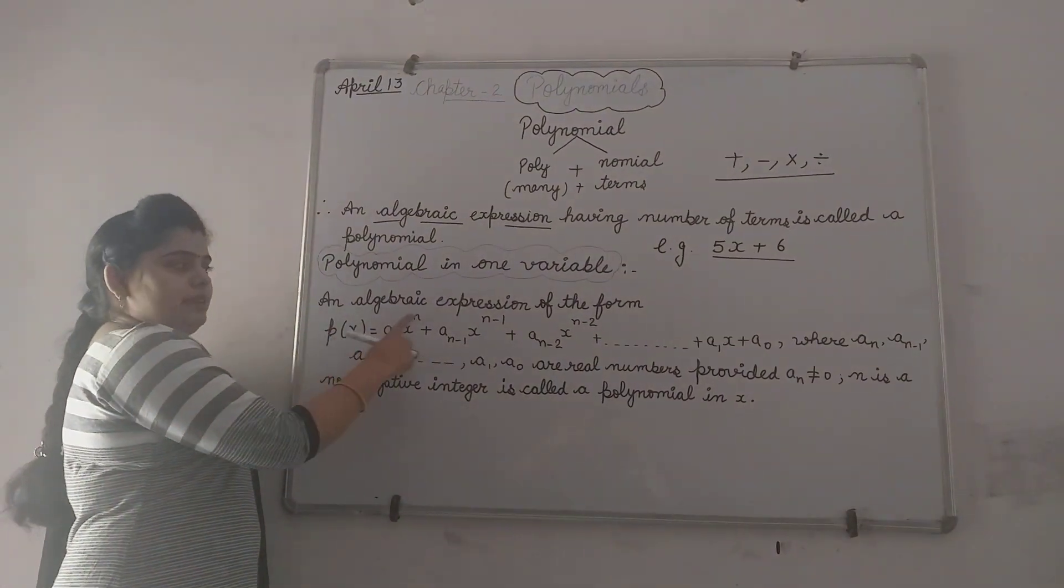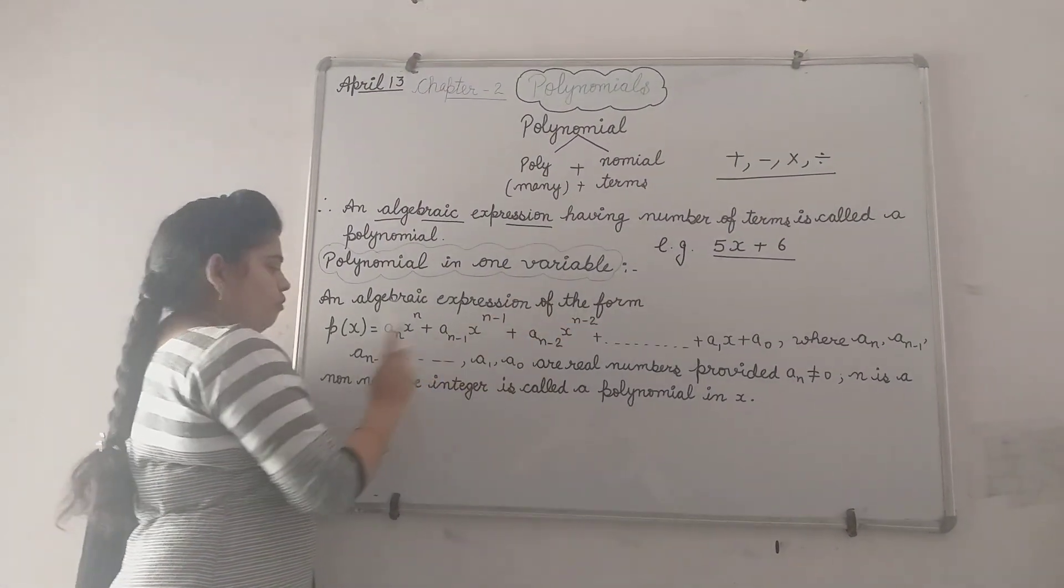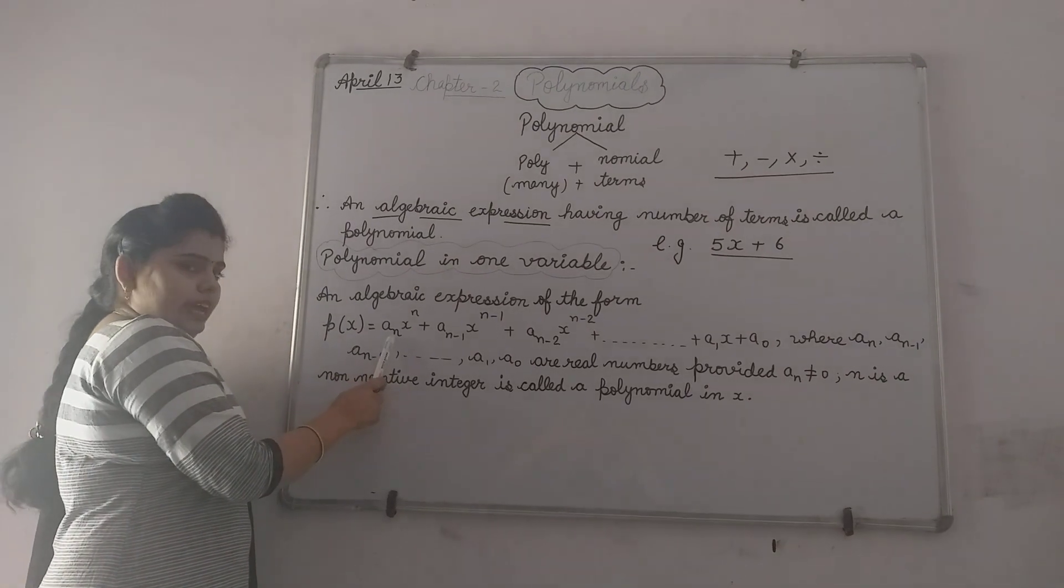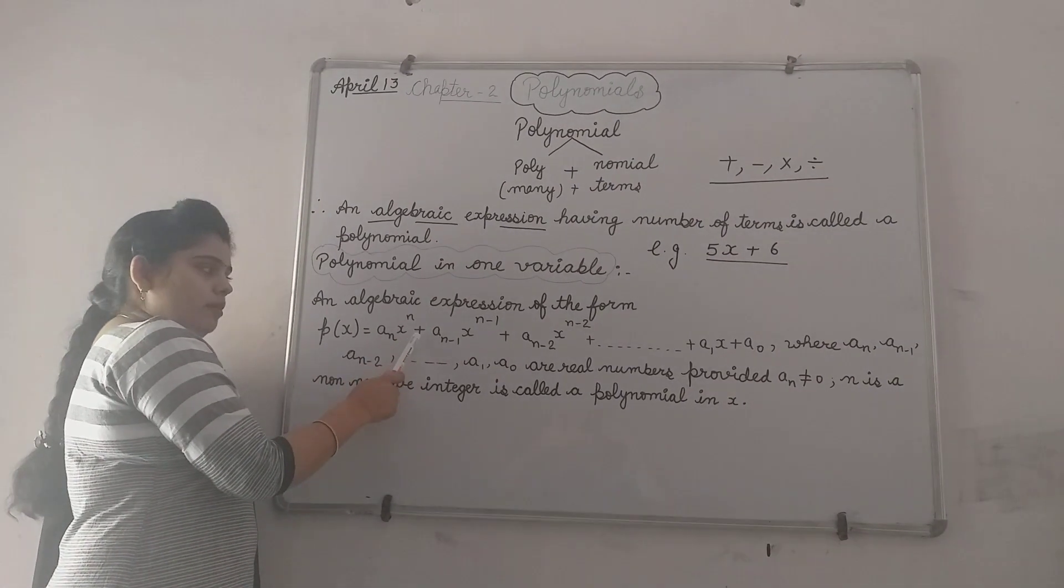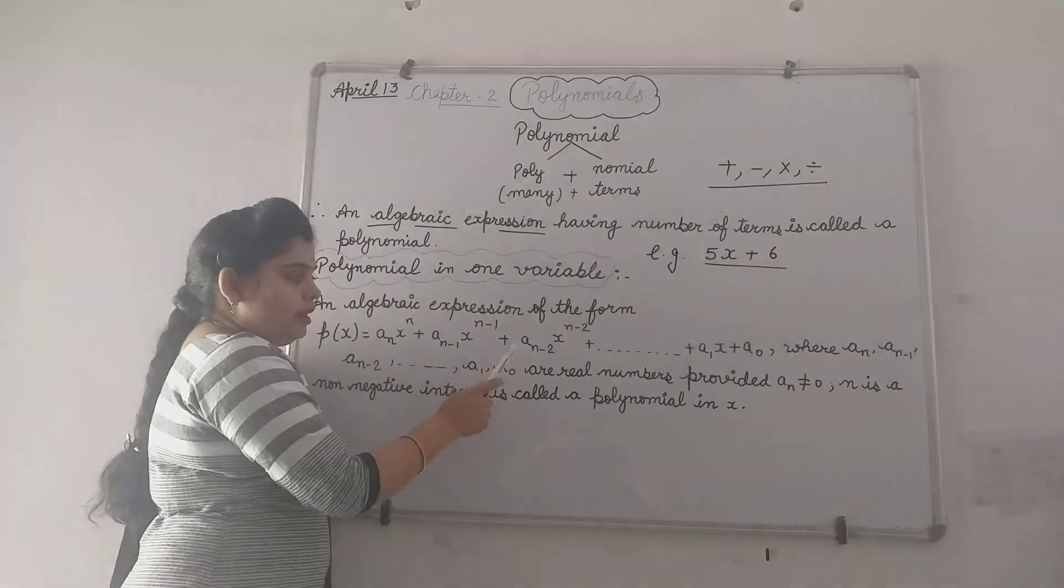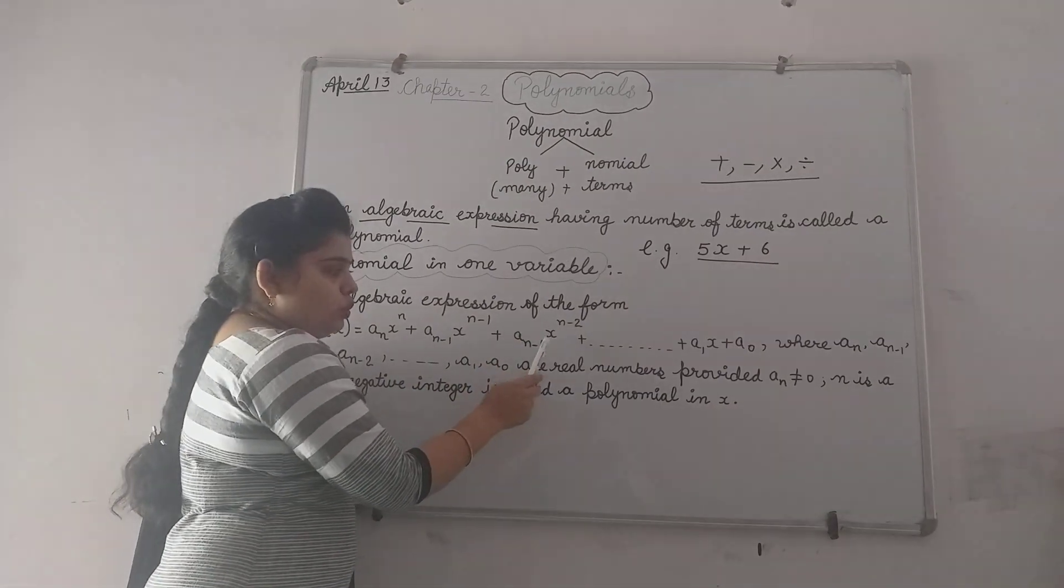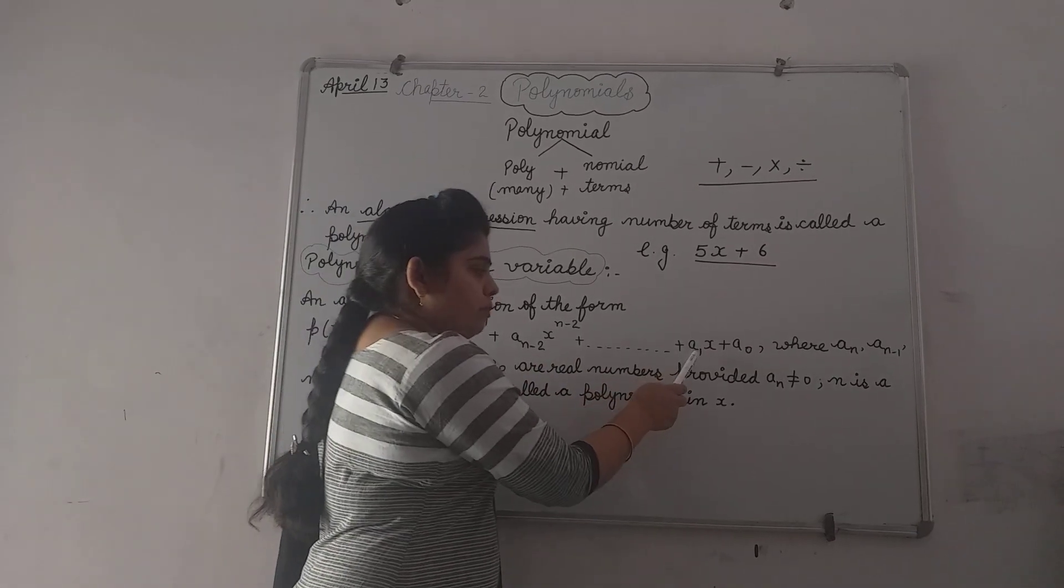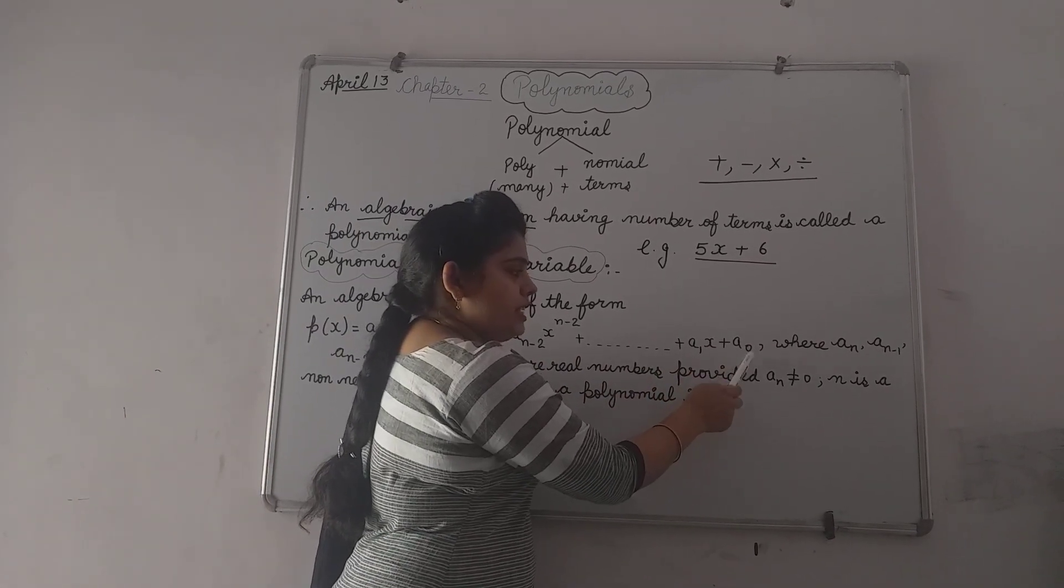Then, let's start. An algebraic expression of the form P(x) equals an x raised to the power n plus an minus 1 x raised to the power n minus 1 plus an minus 2 x raised to the power n minus 2, so on up to a1 x plus a0,